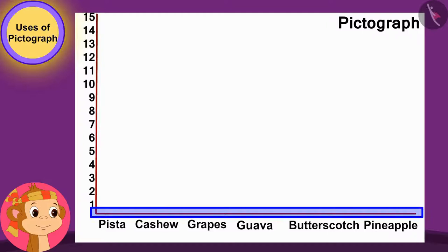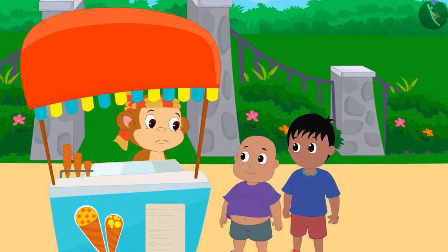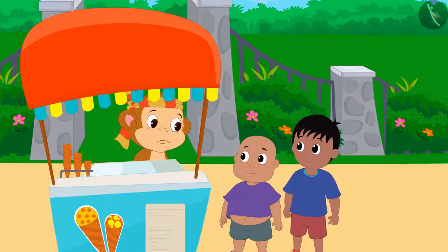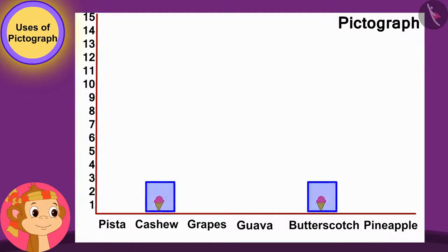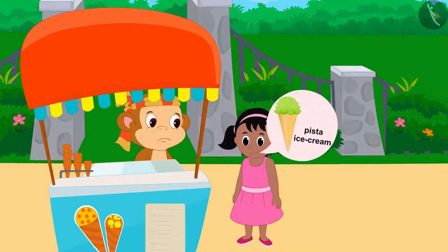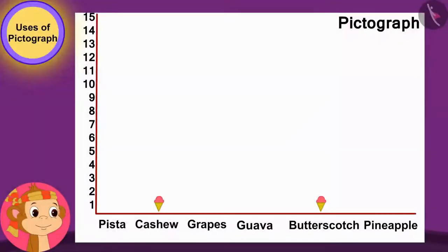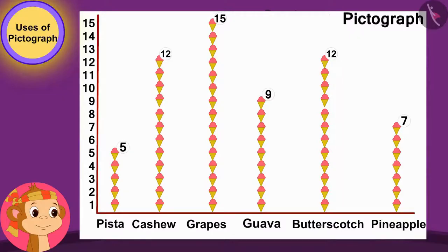On the lower line, he wrote the names of different types of ice creams. Then he asked every customer visiting his stall the name of the ice cream they liked. He showed the choices of each customer by making a symbol of an ice cream cone. For example, Pinky loves Pista ice cream the most, so Babban drew an ice cream cone above Pista ice cream's name. The day was over and Babban's pictograph was also complete.